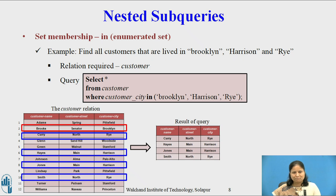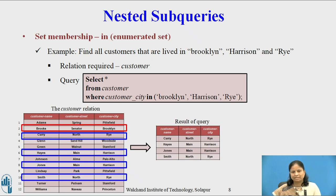If we replace the capital 'B' in 'Brooklyn' with a small 'b' in the WHERE clause, then the result contains only four tuples. This result does not contain the tuple where the customer city is 'Brooklyn' with a capital B — that is, the second tuple with the name Brooks, shown in the red box. So the names used in the enumerated set are case sensitive.